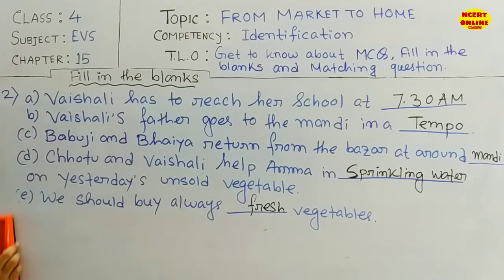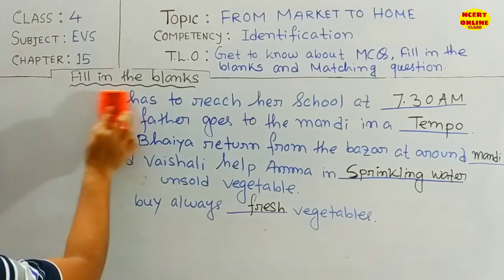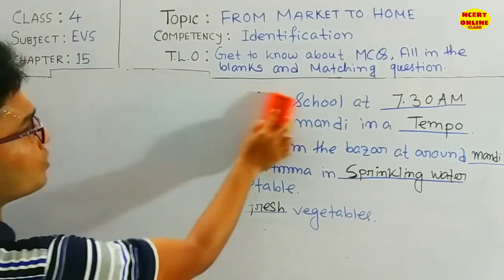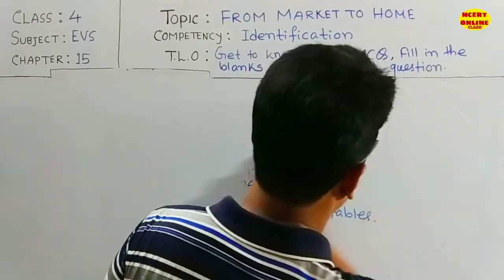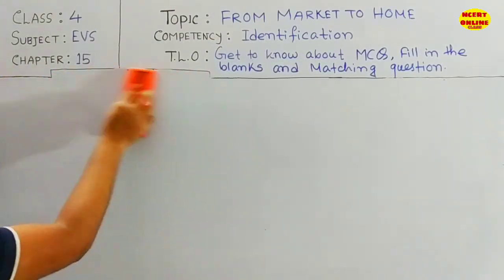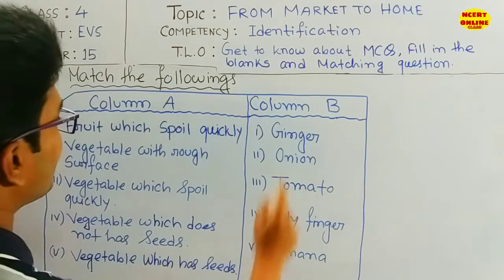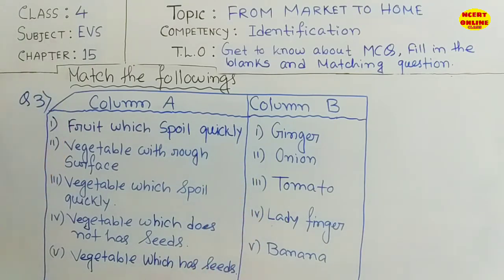I hope that portion is completed. Next we will write the Matching portion. I have already written portion number three on the board — it is related to matching. I have written it in advance to save your time. We have Column A and Column B, and we need to match the correct options. I will first discuss the Hindi meaning.